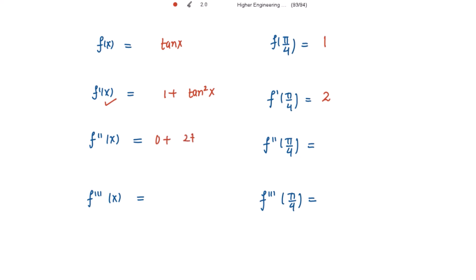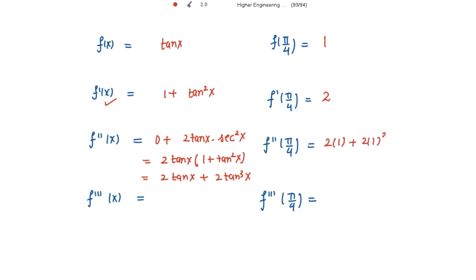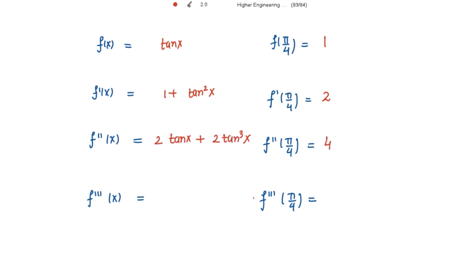For the second derivative, differentiating 1 + tan²(x) gives 2·tan(x)·sec²(x), and writing sec²(x) as (1 + tan²(x)) we get f''(x) = 2·tan(x) + 2·tan³(x). Putting x = π/4: f''(π/4) = 2(1) + 2(1)³ = 2 + 2 = 4.